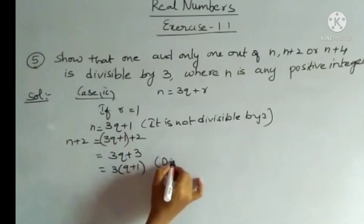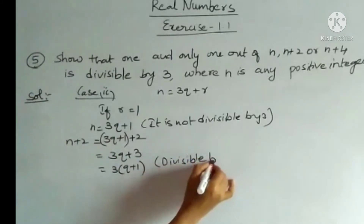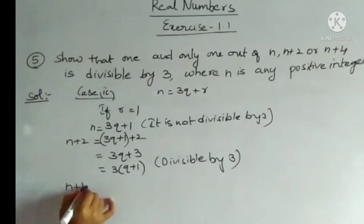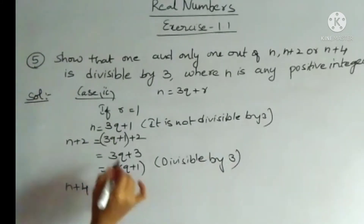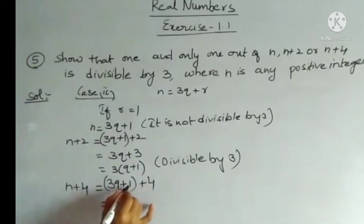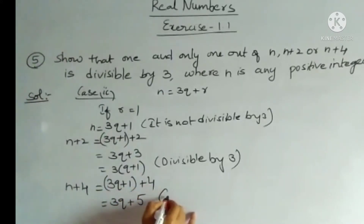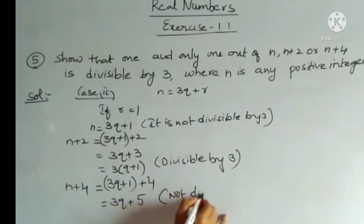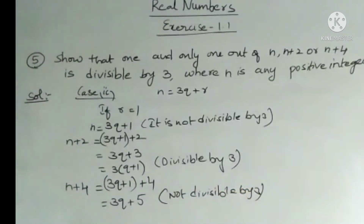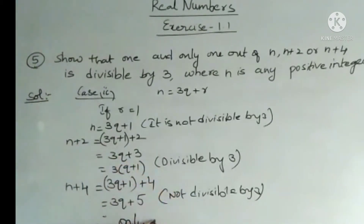And n + 4 = (3q + 1) + 4 = 3q + 5, which is clearly not divisible by 3. The problem looks lengthy but it is not tough at all. Therefore, in Case 2, only n + 2 is divisible by 3.